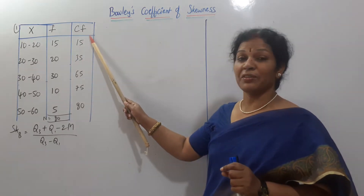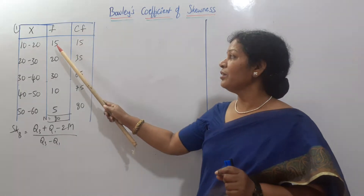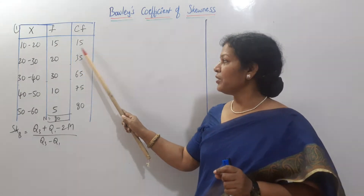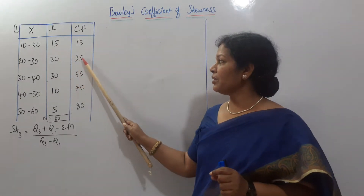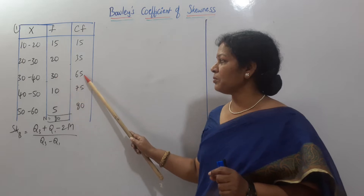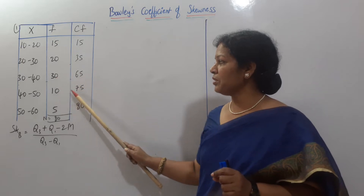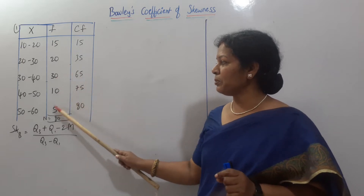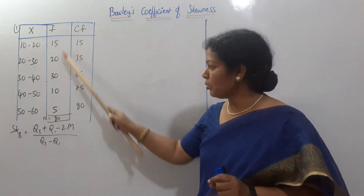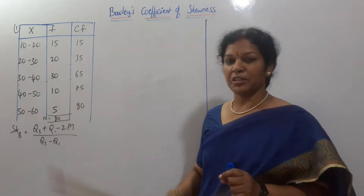CF: the first value stays as 15. 15 plus 20 is 35. 35 plus 30 is 65. 65 plus 10 is 75. 75 plus 5 is 80. The total also comes to 80.